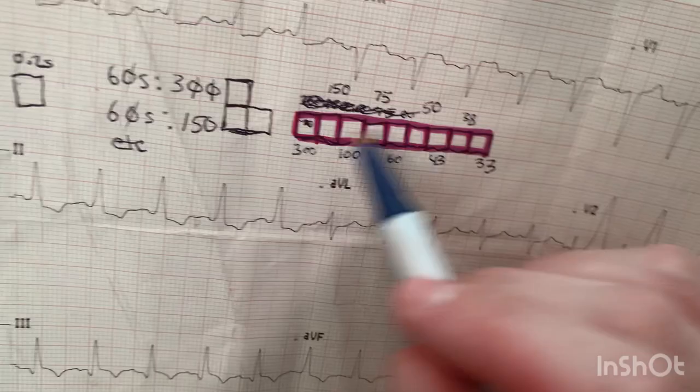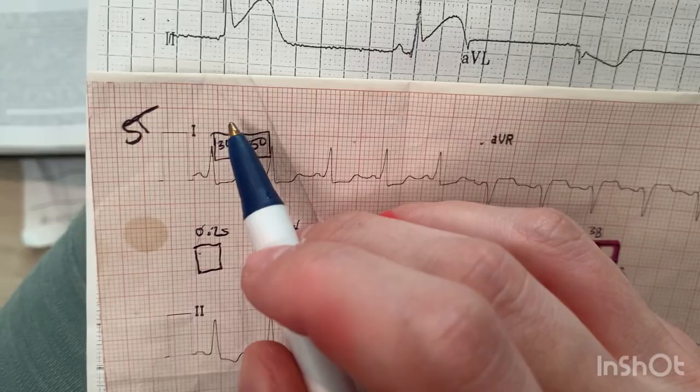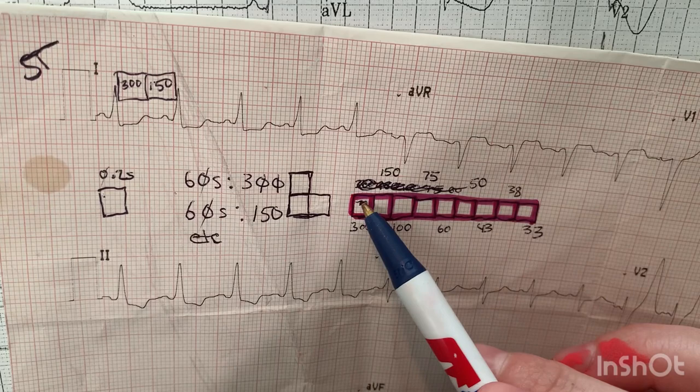You try to find where the QRS complex lines up with the start of one of the big boxes, then count how many boxes are between two QRS complexes. For example, if there are two boxes between them, that's 300, 150 — so the rhythm is approximately 150 beats per minute.